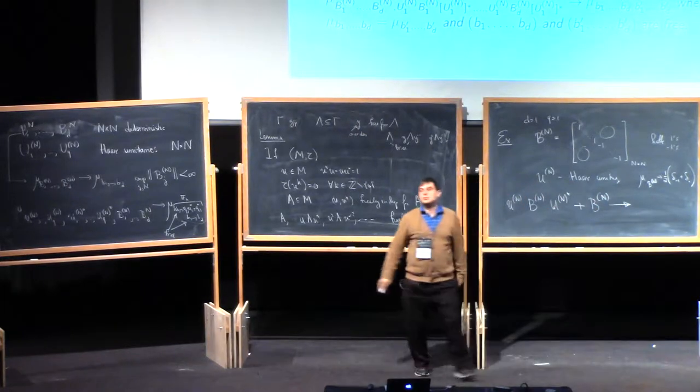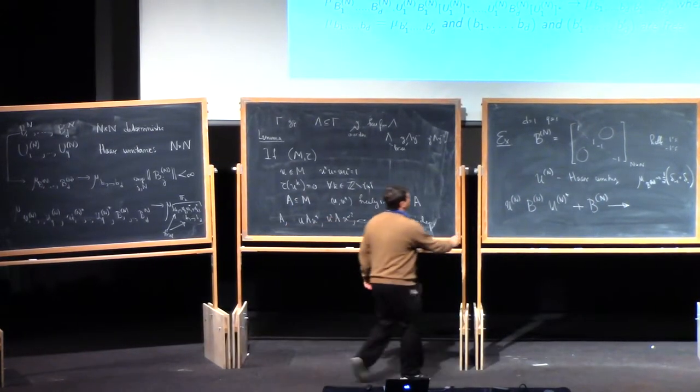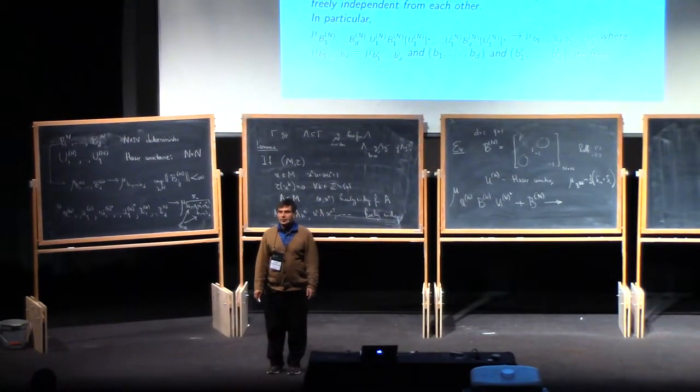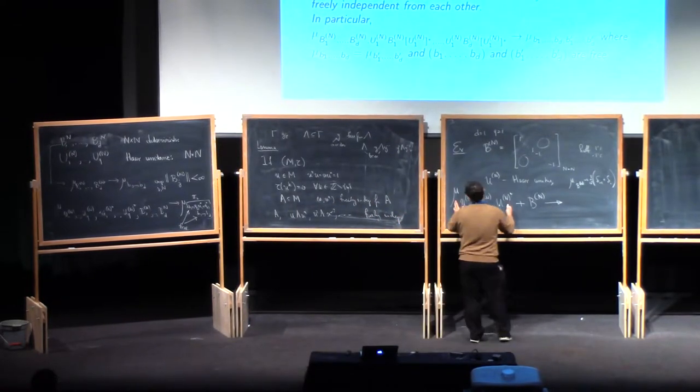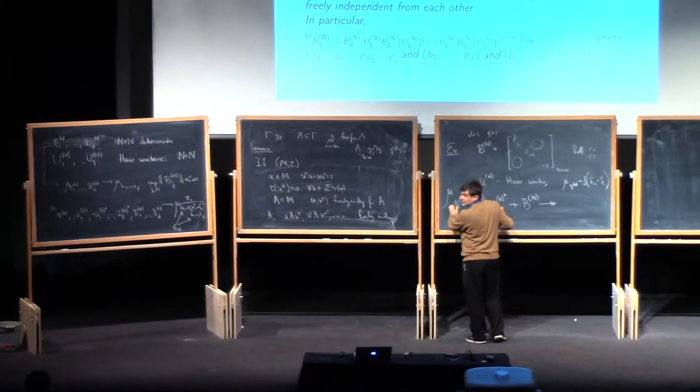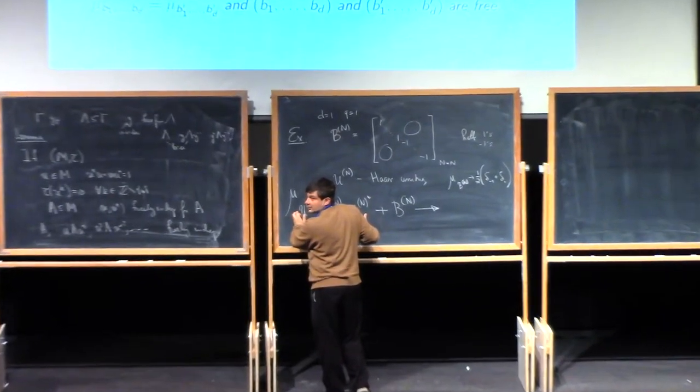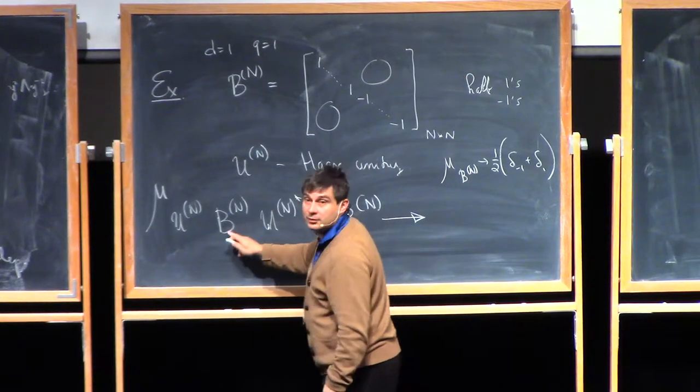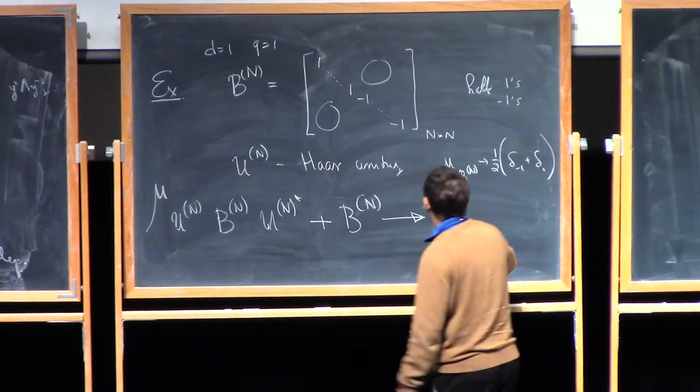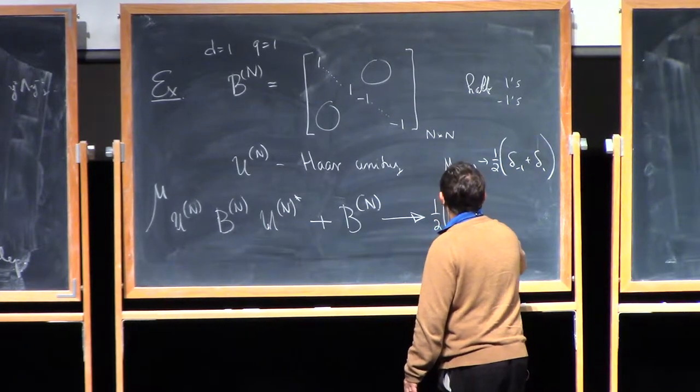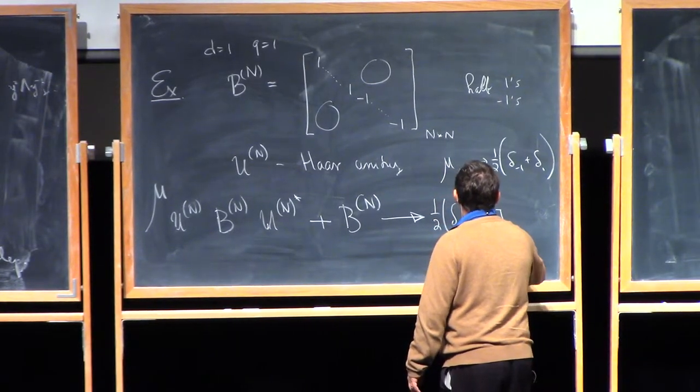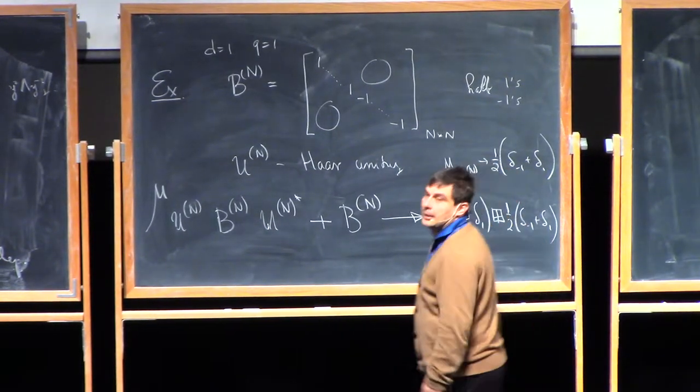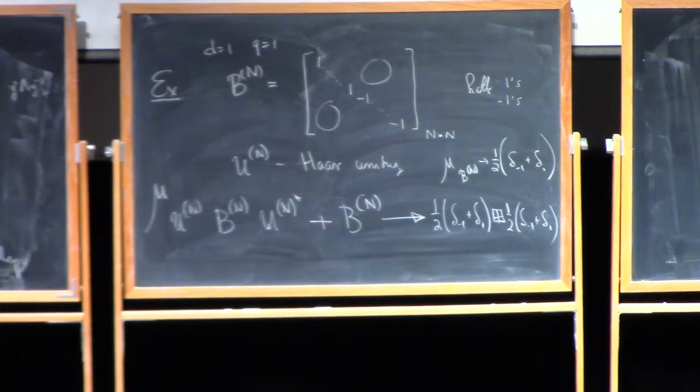So what does this converge to? What law? Well, this is something that asymptotically will be something that has the same law. So its law, delta mass at minus one, one. This is the same one. And these are going to be freely independent, so I've heard the word free convolution. What you're going to get is simply the result of convolving this measure, freely convolving it with that measure. And one of the exercises in the notes is to do this computation. In fact, you get the arcsine law.